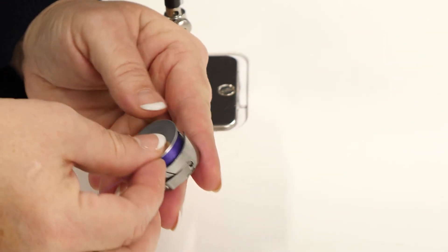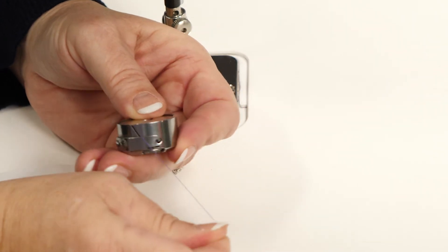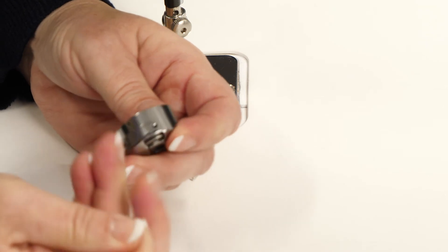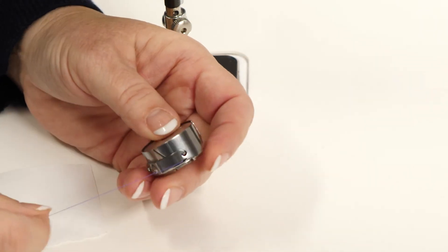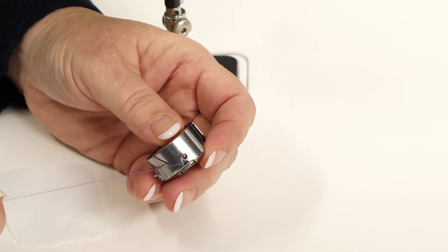Slide it into the bobbin case and slide it through that guide, then go up underneath the tension spring. At that point, you're ready to put it back into your machine.